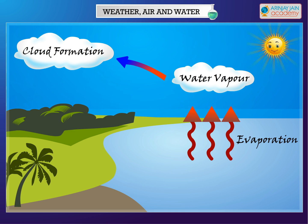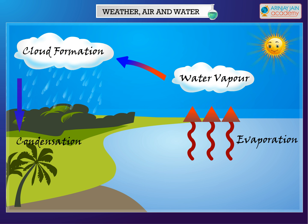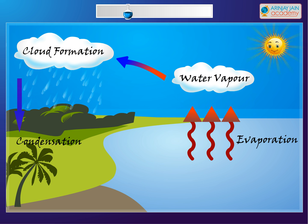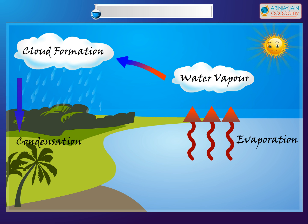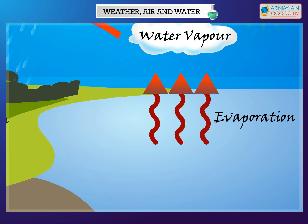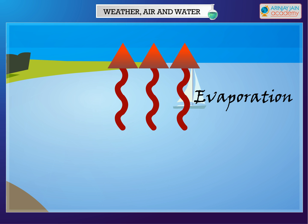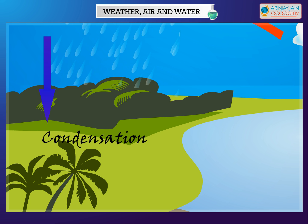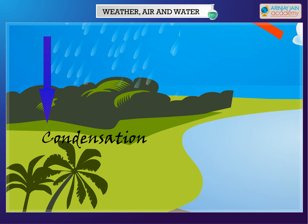When the water droplets in the clouds are heavy, they fall on the earth in the form of rain. This continuous flow of water from the earth's surface to the atmosphere and from the atmosphere back to the earth is called the water cycle in nature. The process by which water changes into vapors due to heat is called evaporation. The reverse is condensation — the process by which water vapor turns into droplets of water on cooling.